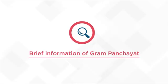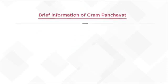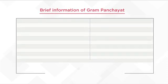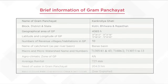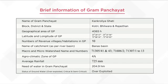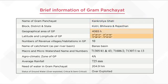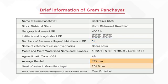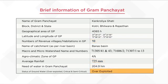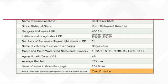Under Brief Information of Gram Panchayat, you get basic information related to the Gram Panchayat such as name, location, area, latitude, longitude, number of villages, average rainfall, water requirement, groundwater situation, and watershed.